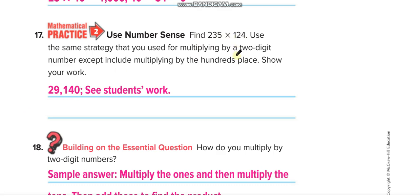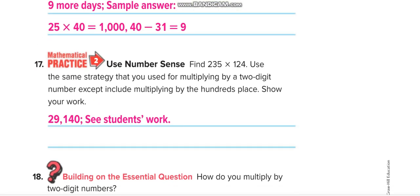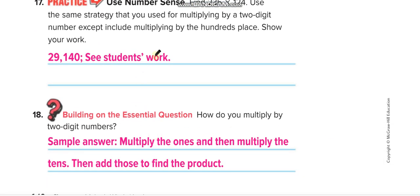Find 235 times 124. Here is the answer guys. This is a three-line multiplication. So all of you guys have to, just like the one which we are solving here. Here it is. Like this one. Okay.